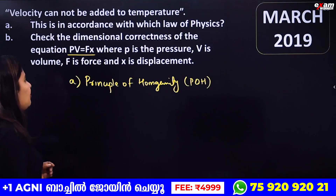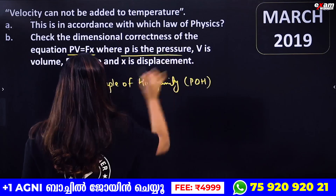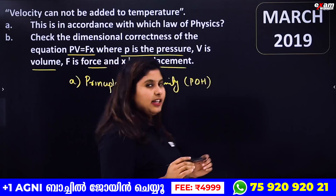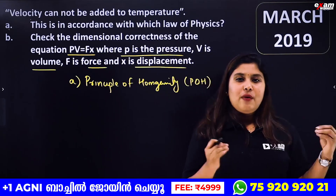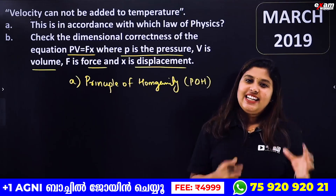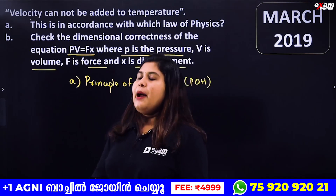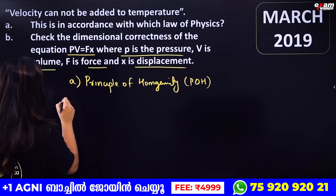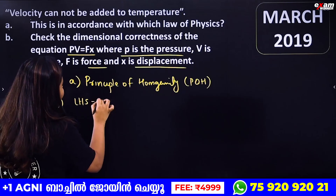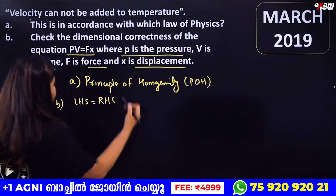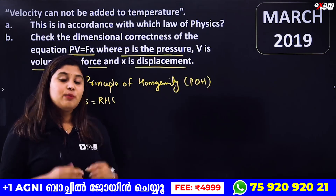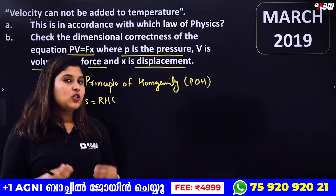PV is equal to Fx. Where P is the pressure, V is the volume, F is the force, and X is the displacement. We need to check whether this is dimensionally correct. To do that, the left-hand side dimension should be equal to the right-hand side dimension. If LHS equals RHS dimensionally, the equation is generally considered correct.